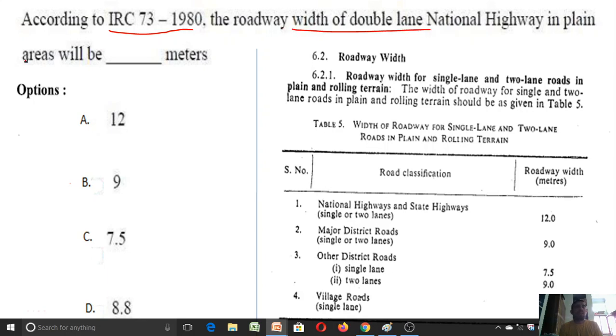Here I have a clause from IRC 73-1980. In section 6.2.1, the roadway width for a single lane and two lane roads in plain and rolling terrain should be given in table number 5. So let us see in the table number 5 for the national highways and state highways, single or two lanes, the roadway width will be 12 meters. The roadway width for a double lane national highway in plain terrain is 12 meters. So for this question, option A is correct.